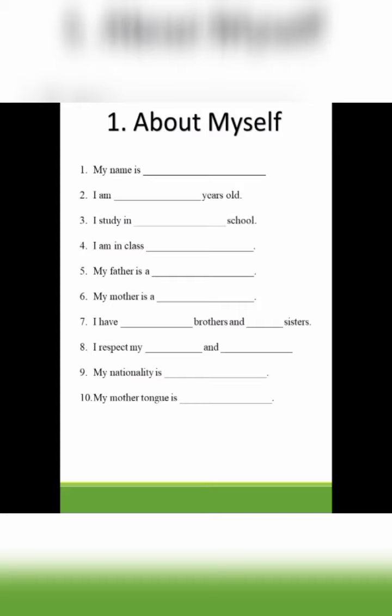The first picture composition is about myself. In this, children, you have to write about yourself — you have to describe yourself. What is your name? For the name, the first letter will be capital. Be very careful while writing your name; the first letter will be capital. Write your name here and the first letter will be capital. Second is: I am dash years old — write your age.